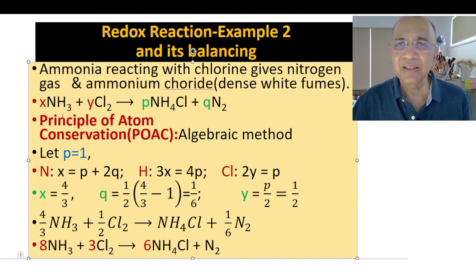Before we study the logic of how it is a redox reaction, let's try to balance it by giving the arbitrary coefficients x, y, p, q. You can as well give a, b, c, d. So this is what we call the algebraic method and it is based on the principle of atom conservation, POAC, because the mass is never destroyed, never created, so also the number of atoms of each element.